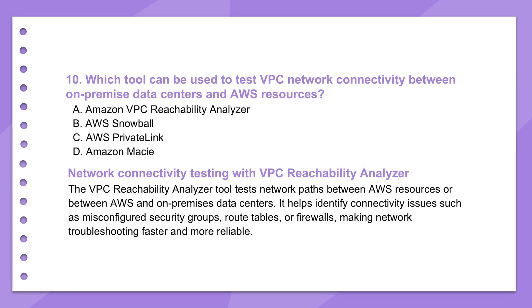For ensuring your network is solid — especially between cloud resources and on-premises data centers in hybrid setups — Amazon VPC Reachability Analyzer is the tool for checking that. It's a diagnostic tool that analyzes and verifies if network paths are open and working correctly between your AWS resources, or between AWS and your own data centers via VPN or Direct Connect. In complex hybrid environments, trying to manually figure out why something can't connect can be a real nightmare. This tool gives you a clear logical analysis of the path, highlighting configuration issues like firewalls or routing problems, helping you troubleshoot connectivity way faster. It's like having a network detective on call.